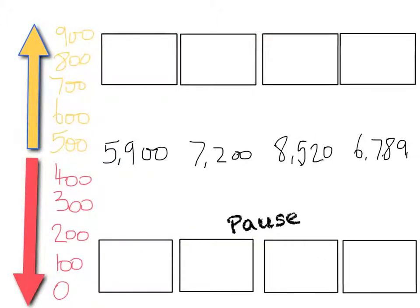Pause one more time to round these four numbers to the nearest multiple of a thousand. Once more, determine which multiples of a thousand each number lies between before you decide whether to round upwards or downwards. Away you go.